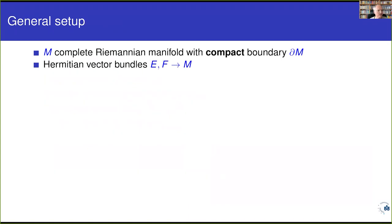So that's just a simple example indicating some of the phenomena that might occur. Now let me explain the general setup. We start with a complete Riemannian manifold with boundary, where the boundary is compact. Often the manifold M is also compact, but there are situations where we allow M to be non-compact — I will give such an example towards the end of the talk.